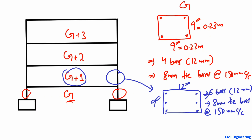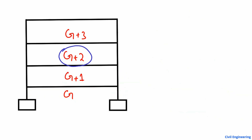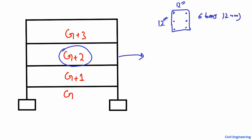For the second story, the minimum column size should be 12 inches by 12 inches. There should also be six bars of 12 millimeter diameter as the minimum size for the main bars. The tie bars should be 8 millimeter at a 150 millimeter center-to-center spacing.